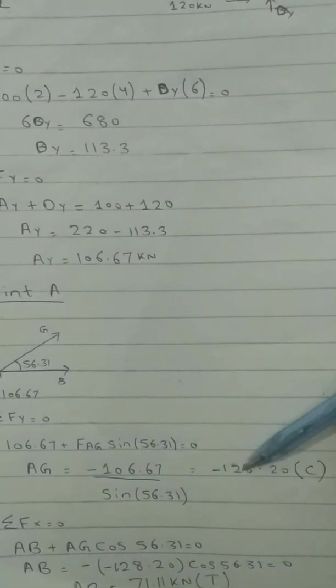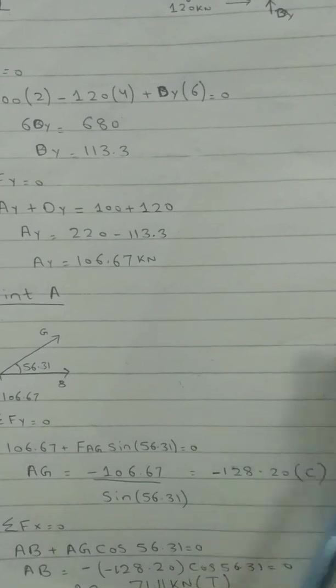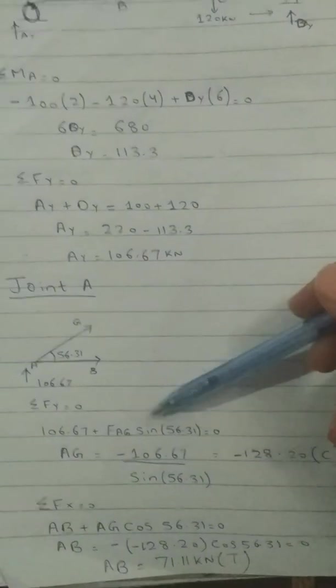And by putting the value of AG, you can calculate AB is 71.11 kilonewton. So now we will move towards the next joint, joint B.